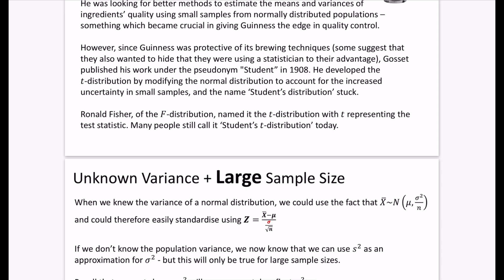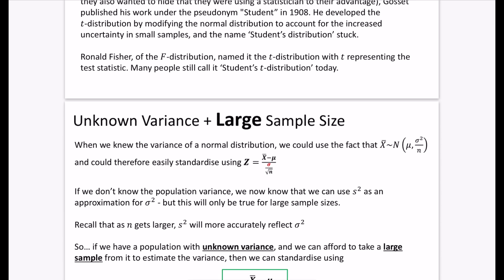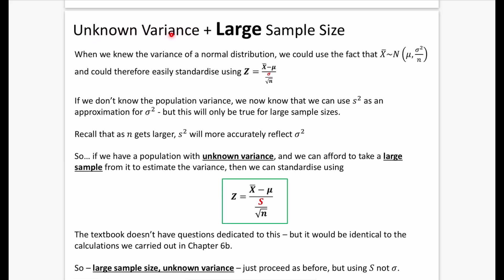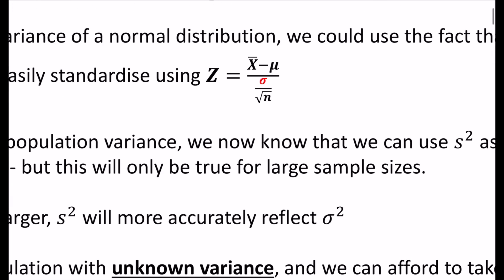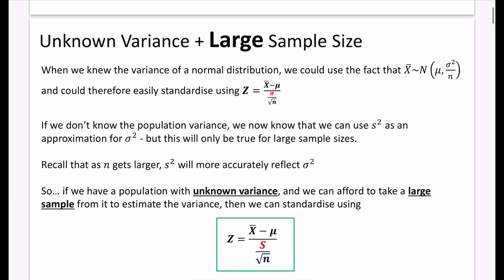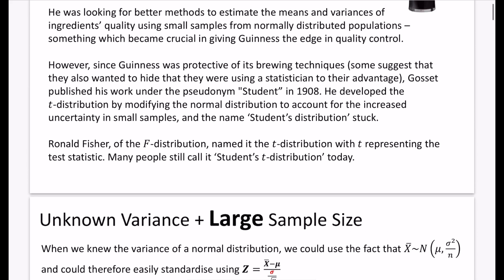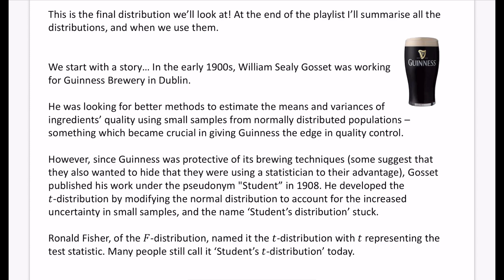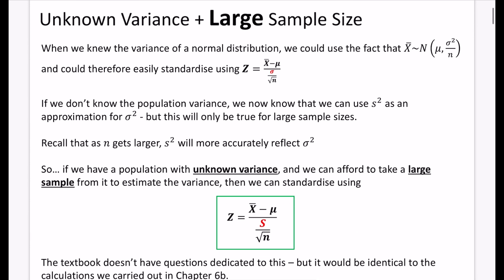We're not going to talk about the T distribution yet. We're going to think about why we wouldn't need the T distribution in certain scenarios. If we had a scenario where we had an unknown variance of a population and we have a very large sample size. When we knew the variance of a normal distribution, we could use the fact that the sample means would have a normal distribution with a mean of μ and a variance of σ²/n. So we could therefore easily standardize this using z = (x̄ - μ)/(σ/√n). If we don't know the population variance, which is quite likely, and if you think in the context of William Gossett, he didn't know the variation of people bringing their ingredients to him from the farms.